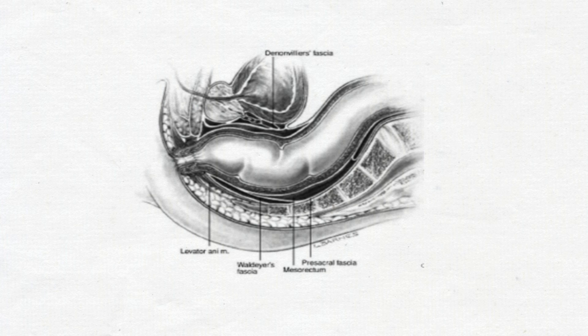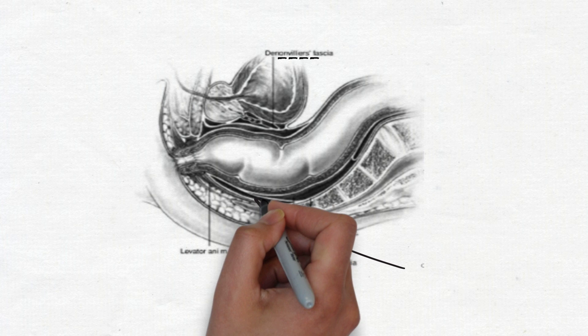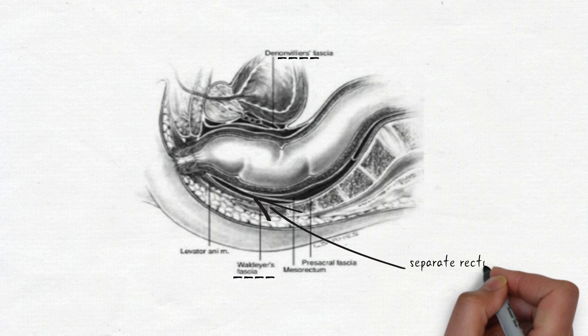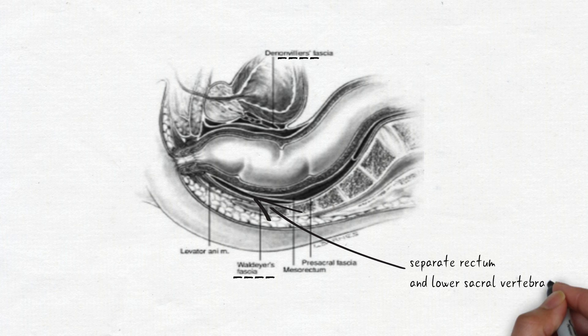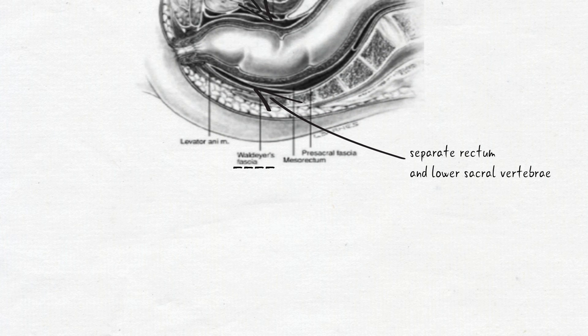Rectum has two fascial layers. There are Waldeyer layer and also Denonvilliers fascia. The Waldeyer fascia separates the rectum from the lower sacral vertebrae whereas Denonvilliers fascia separates prostate and bladder. The stripping of these anorectal fascia can lead to hemorrhages.